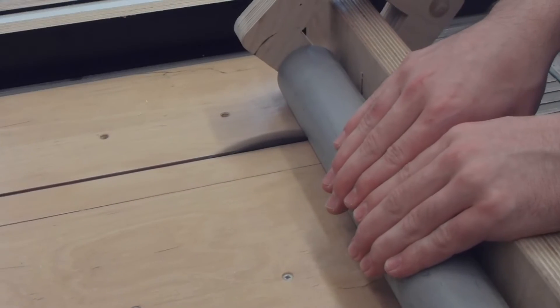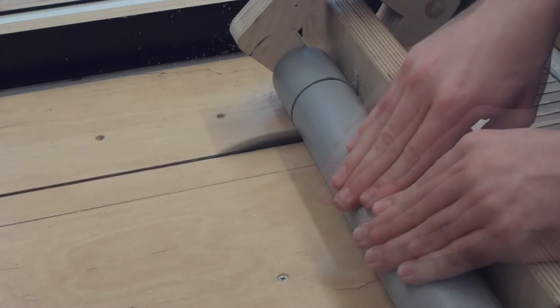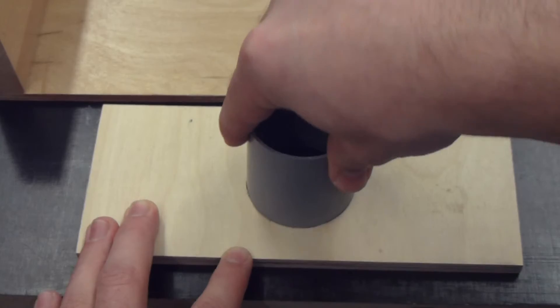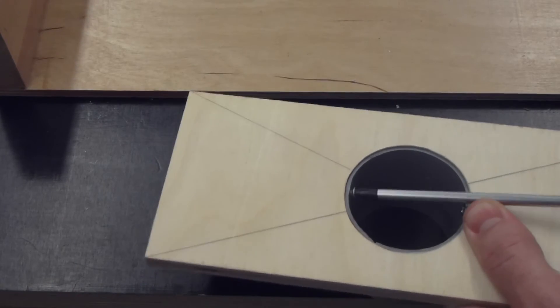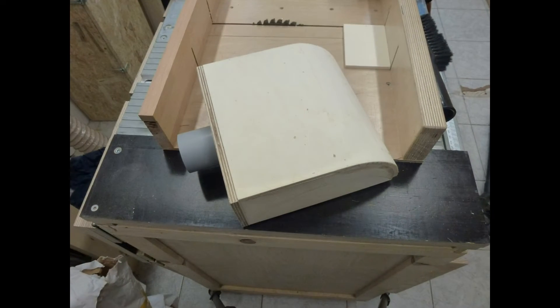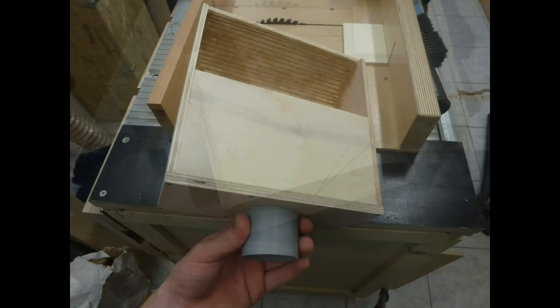I cut the right size piece of PVC pipe, put it into another piece of plywood and secured it from the inside with two screws. And then it was basically done and ready to use.